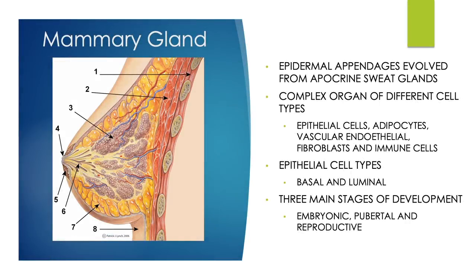Mammary glands are epidermal appendages that evolved from apocrine sweat glands. They are a complex organ of different cell types, including epithelial cells, adipocytes, vascular endothelial cells, fibroblasts, and immune cells. There are two main epithelial cell types: basal cells, which include the myoepithelial cells, and luminal cells, which include the ducts and lumen. There are three main stages of development: embryonic, pubertal, and reproductive, and we will review all three in this video.